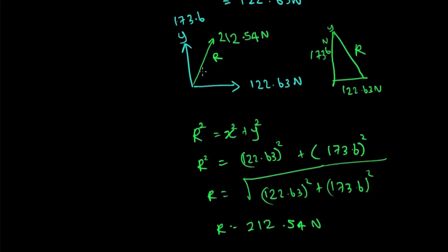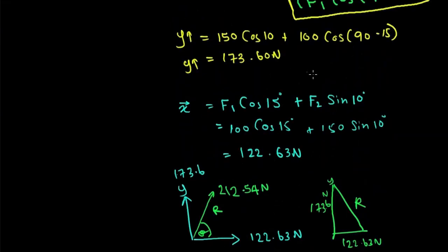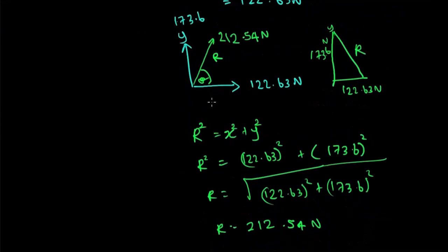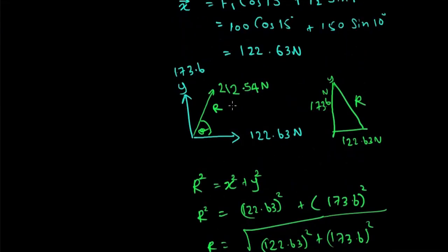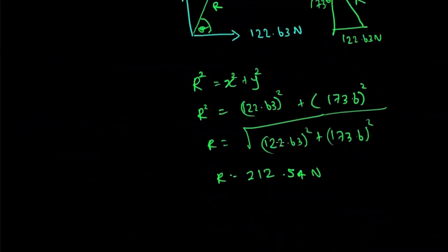If you are interested in finding the angle theta, you can use the same equation as for finding X and Y components. 212.54 times cos theta will be equal to 122.63. Let me write it like this: R cos theta will be equal to X.